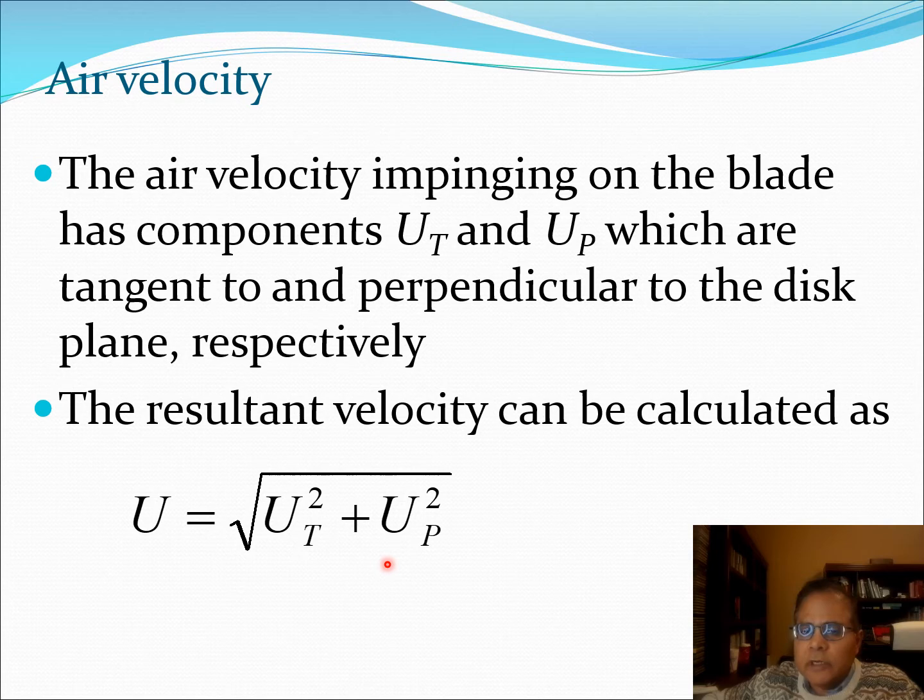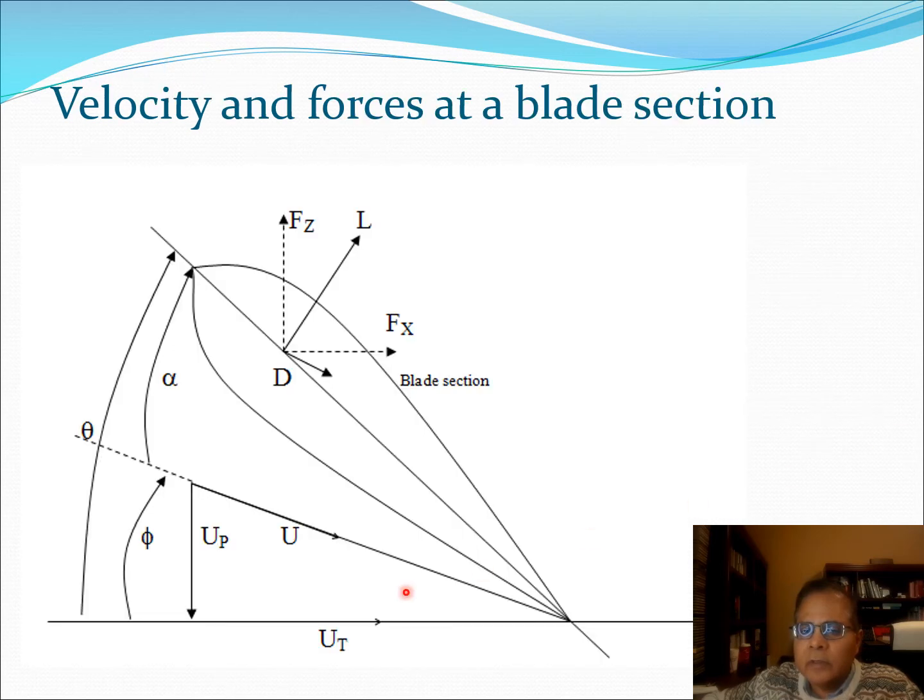Now let us go further at the air velocity. The air velocity has two components ut and up. ut is tangent to and up is perpendicular to the disc plane respectively. Therefore the resultant velocity would be the square root of the square of these two velocities. So u is going to be equal to up square plus ut square as you can also see from this right angle triangle shown here.